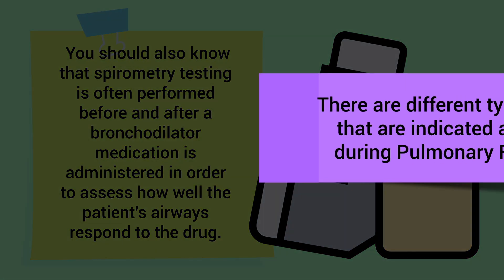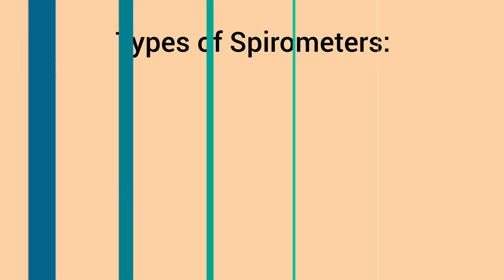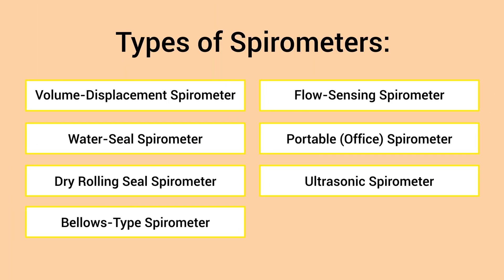There are different types of spirometers that are indicated at different times during pulmonary function testing. Some of the most common examples include volume displacement, water seal, dry rolling seal, bellows type, flow sensing, portable, and ultrasonic spirometers.